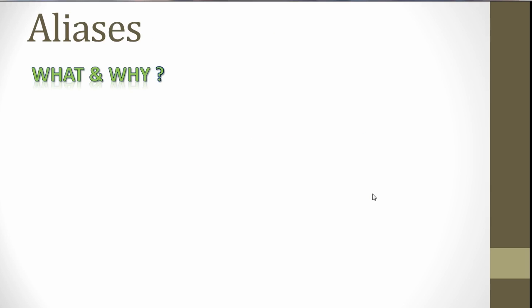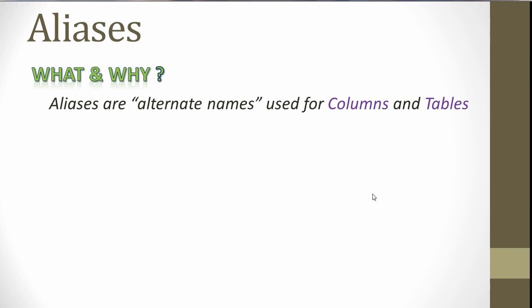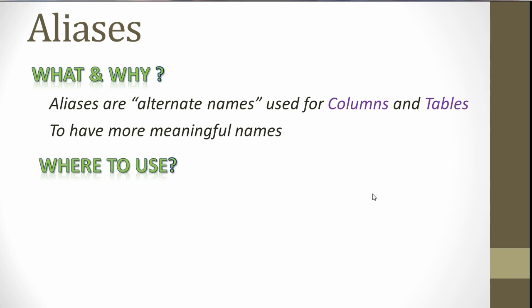So what are aliases and why do we need them? Aliases are just alternate names, and the purpose here is to use them for columns and tables. Aliases are generally used to provide more meaningful names for columns, but they have some other purposes too. Generally when we have functions in a query, we would be using an alias to name that column.